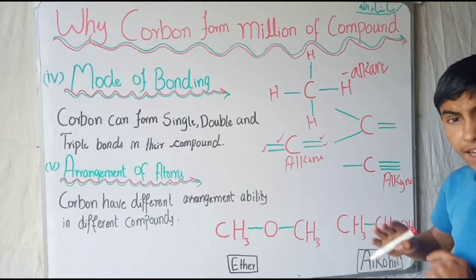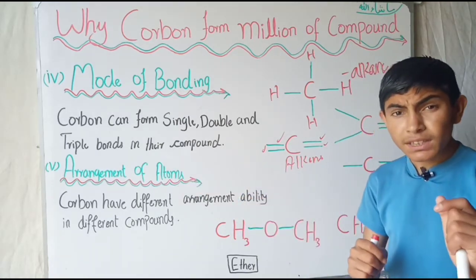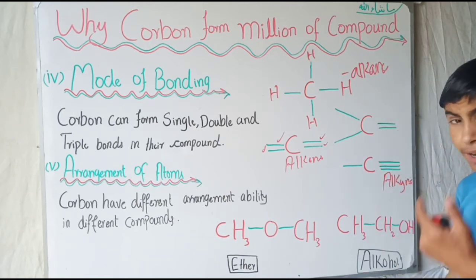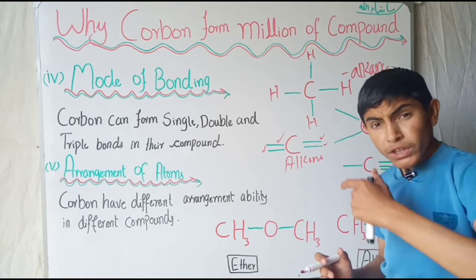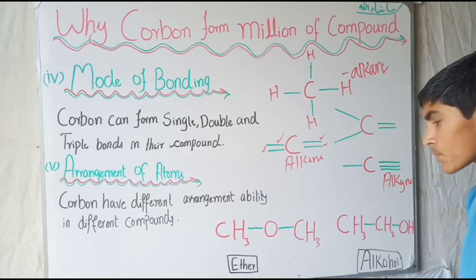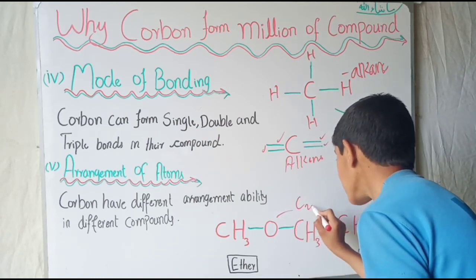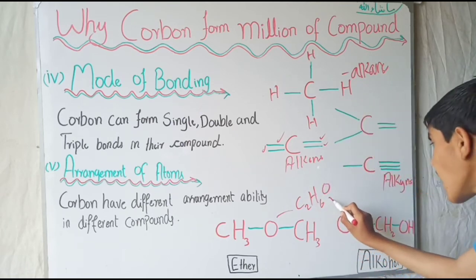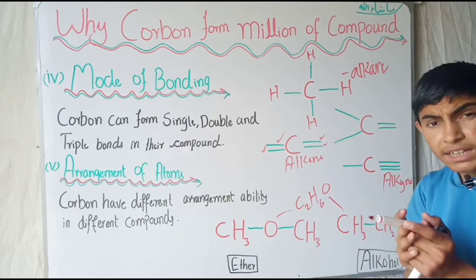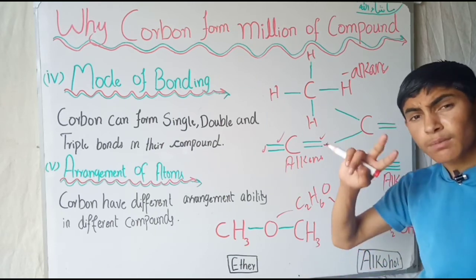The next property is the arrangement of atoms. Carbon occurs in different organic compounds with different arrangements — some occur in between, some occur at the end. This ability of carbon to give different structure and shape to different organic compounds is also important. For example, ether and alcohol both have the formula C2H6O — two carbons, six hydrogens, and one oxygen — but due to the different arrangement, they are differentiated from each other.